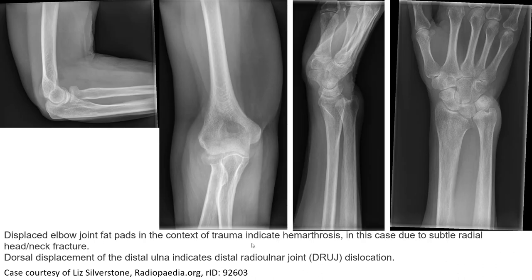Another example where we can see displaced radial head fractures in the context of radial head hematosis. In this case, there is a subtle radial head and neck fracture with displacement of the distal radioulnar joint.